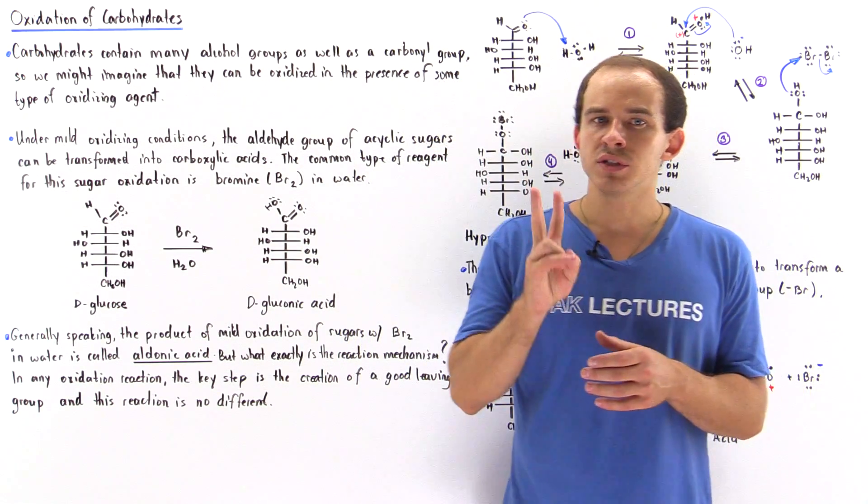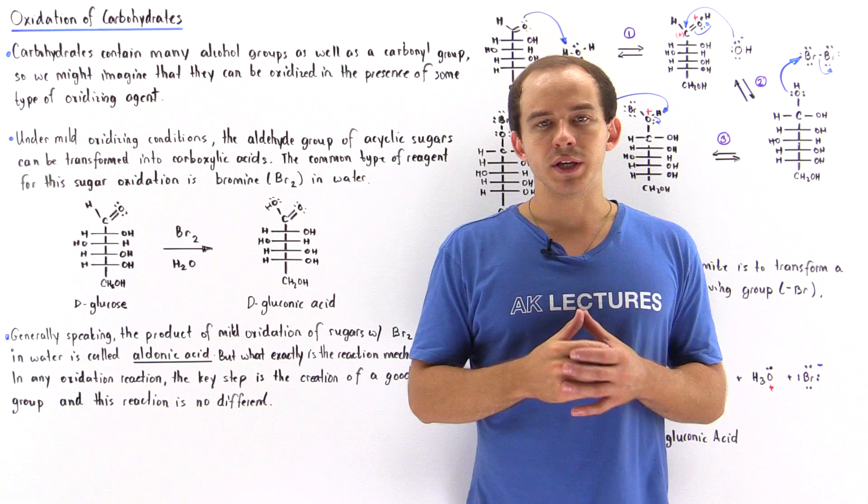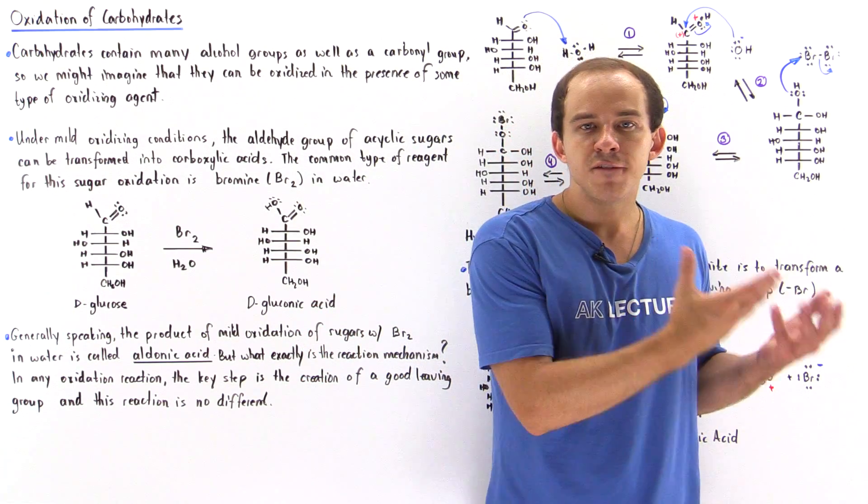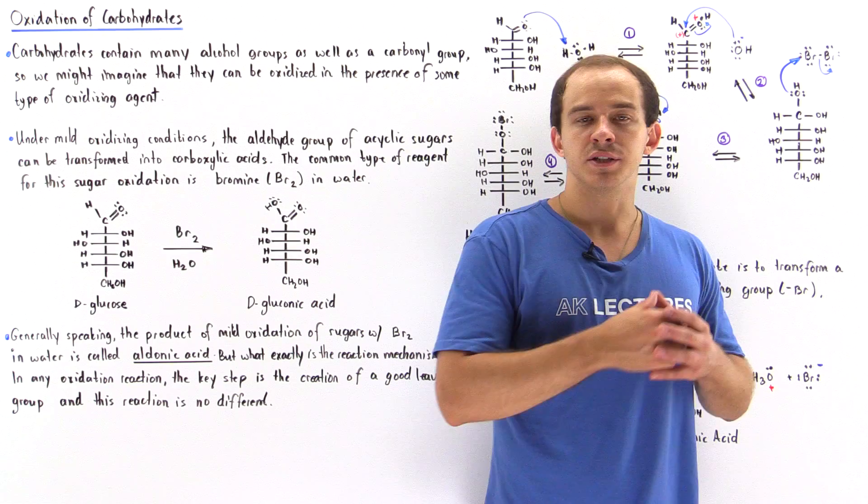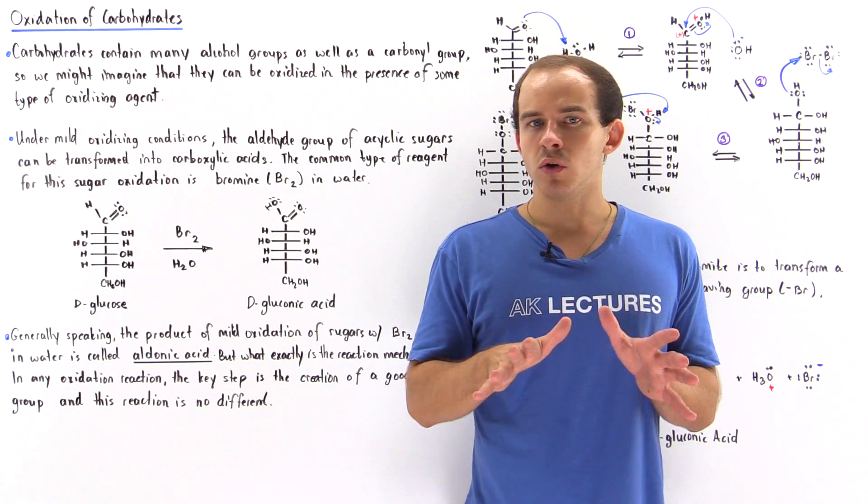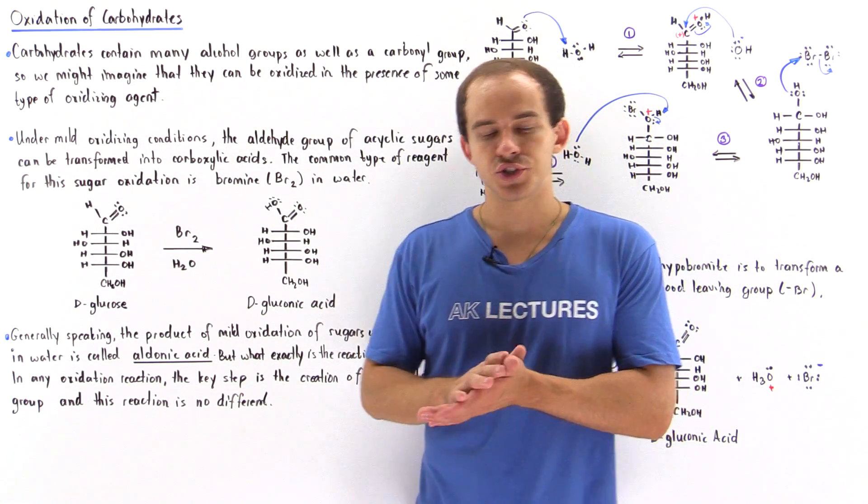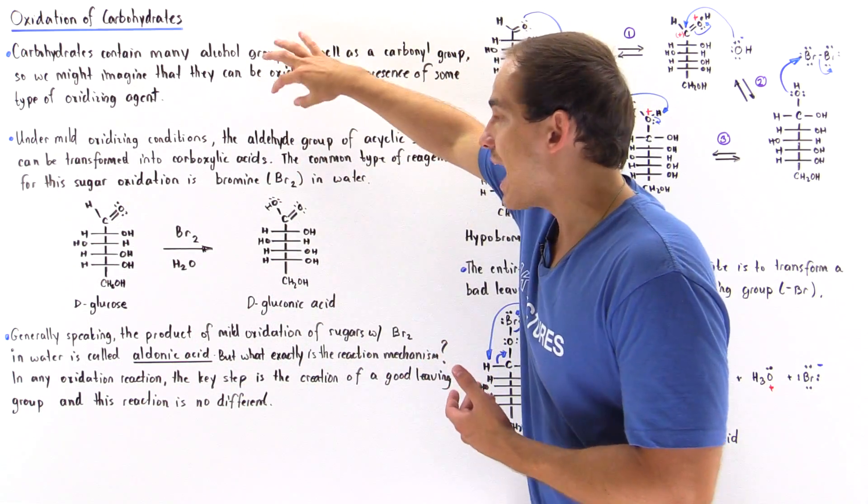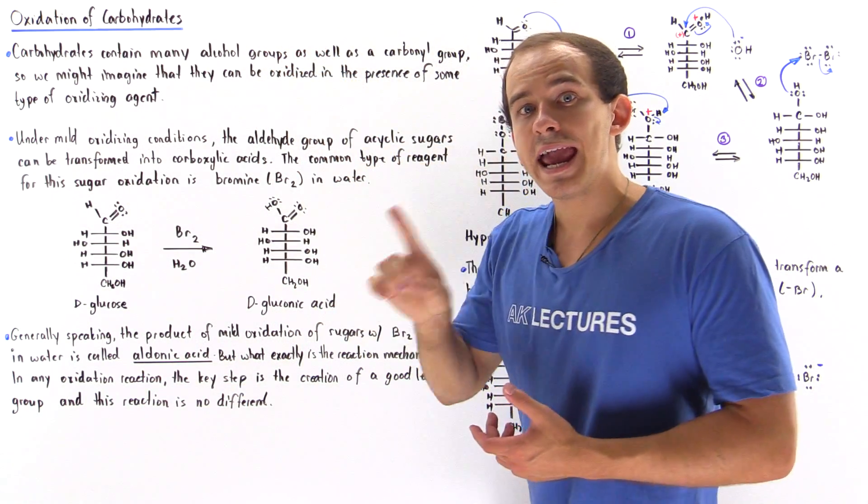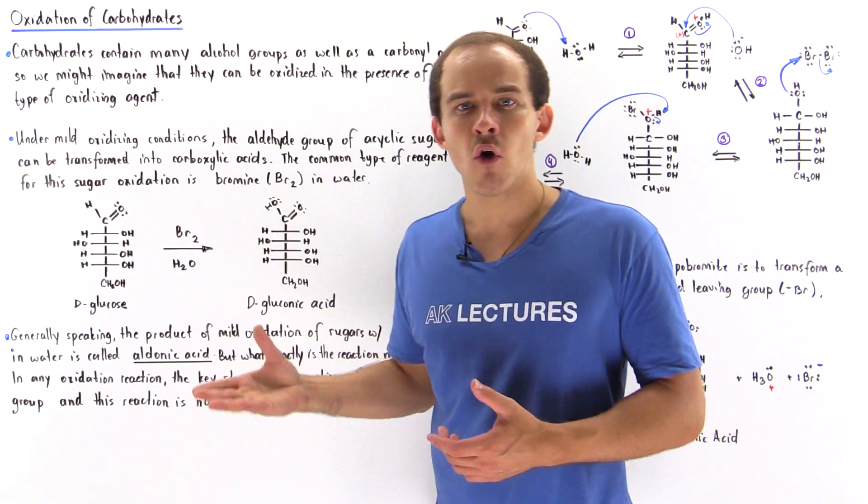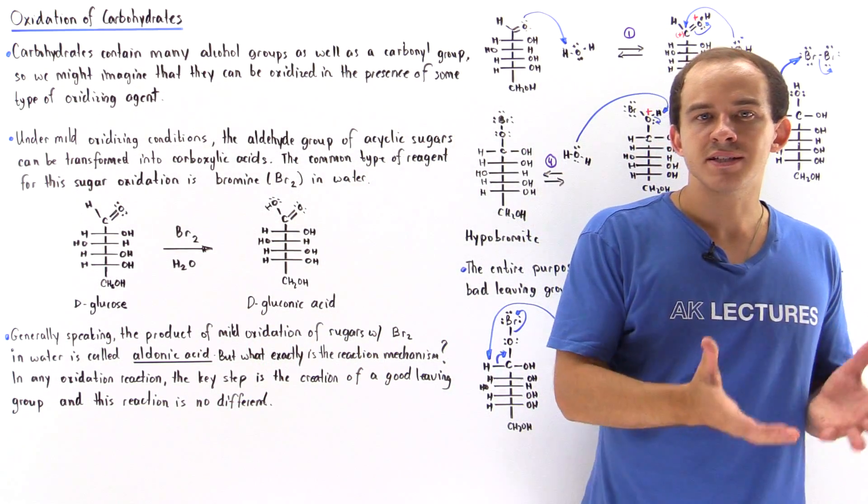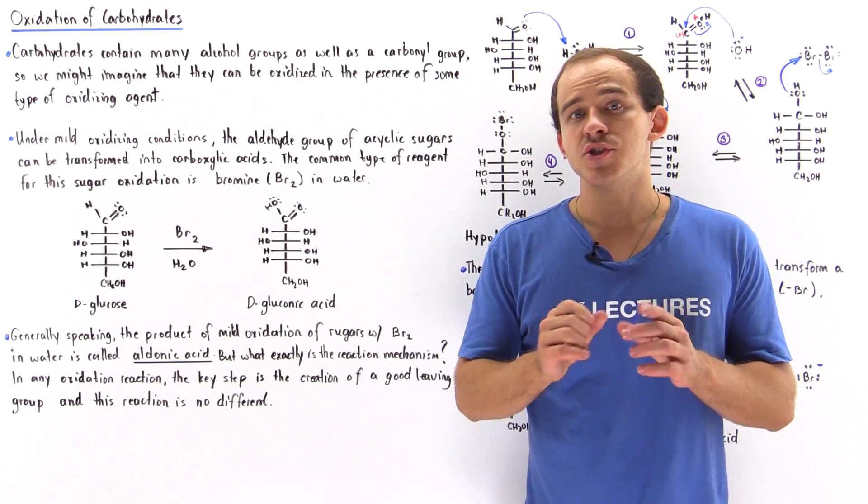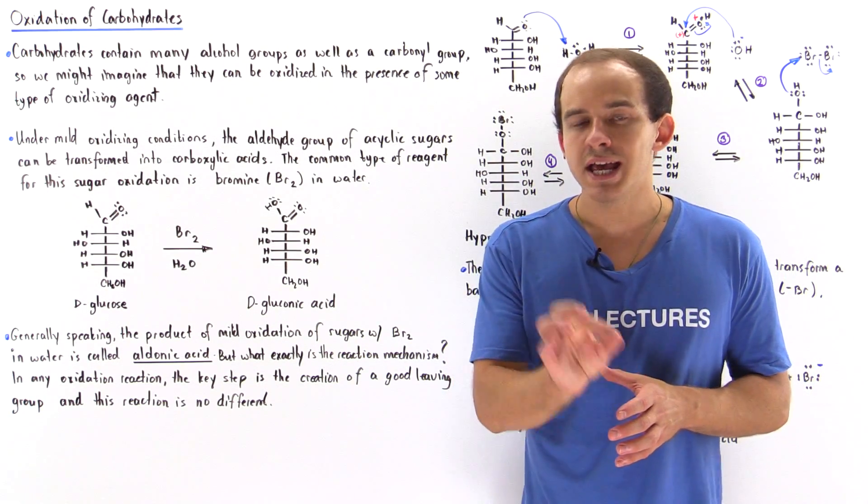Generally speaking, there are two types of conditions that we can use: mild conditions as well as vigorous or harsh conditions. In this lecture we are going to focus only on the mild conditions. Under mild oxidizing conditions, the aldehyde group of any acyclic sugar molecule can be transformed into a carboxylic acid group, and the most common type of reagent that is used is bromine in water.